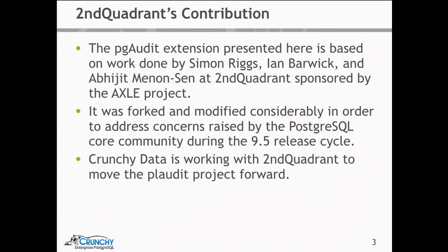The PG Audit extension as it stands now was forked off of a project that was done by Second Quadrant — Simon Riggs, Ian Barak, and Abhijit Menensen. It got forked off initially trying to get it committed to core. There were a number of changes we felt were necessary. Now it's become a 9.5-specific extension. There are features that only exist in 9.5 and up. The PG Audit extension from Second Quadrant will still work on versions below 9.5, but it has a lot less capability in terms of what it audits and performance.